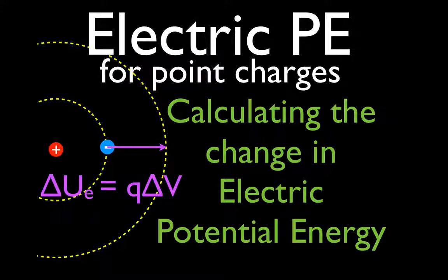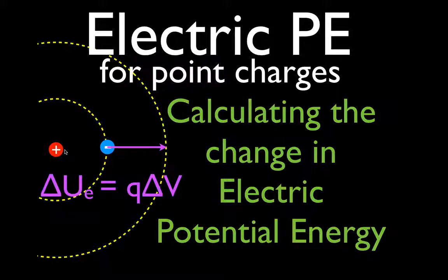In today's video, we are going to go over how to calculate the change in potential energy of an electron when it moves from the first energy level to the second energy level in a hydrogen atom.